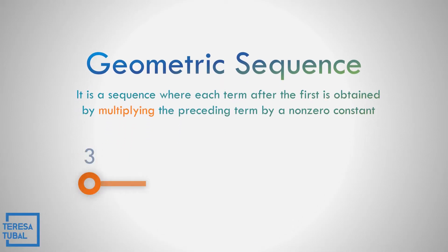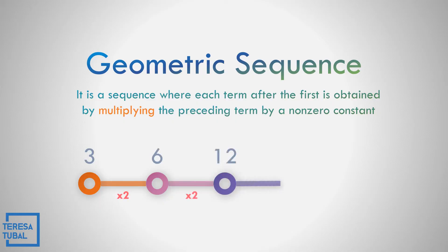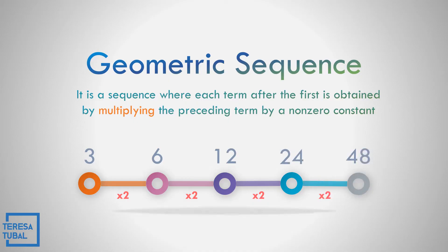Let us see an example of the geometric sequence. Starting with 3: 3 times 2 is 6, 6 times 2 is 12, 12 times 2 is 24, and 24 times 2 is equal to 48.